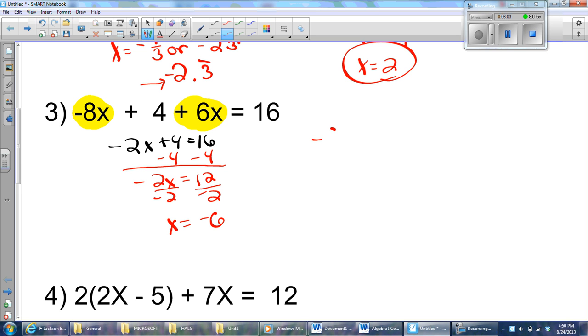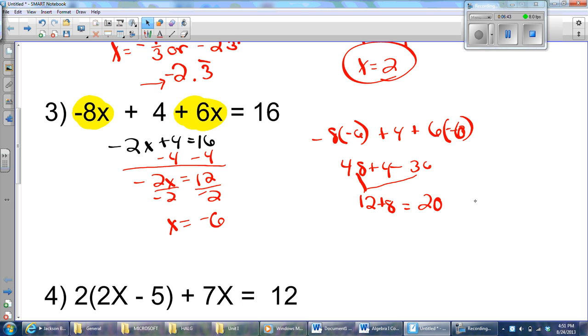To check my answer, I'll go negative 8 times negative 6 plus 4 plus 6 times negative 6. This will be 48 plus 4 minus 36. Well, 48 minus 36 is 12 plus 8. And that will be 20. Uh-oh. I have a problem. Oh, I see. I've made a silly mistake. This is why we check our work. My mistake is actually in my check. Not in the problem. But I was expecting an answer of 16. And I noticed I wrote down plus 8. I should have only written plus 4. 12 plus 4 is 16. And that equals 16. So, I did it right.